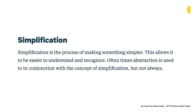Simplification is the process of making something simpler, which allows it to be easier to understand and recognize. Oftentimes abstraction is used in conjunction with simplification, but not always. Simplification is where we take a complex object — maybe a photograph like we will in this assignment — and look at how we can simplify and take elements out of that object, but still have it be recognizable and work in a more graphic context.